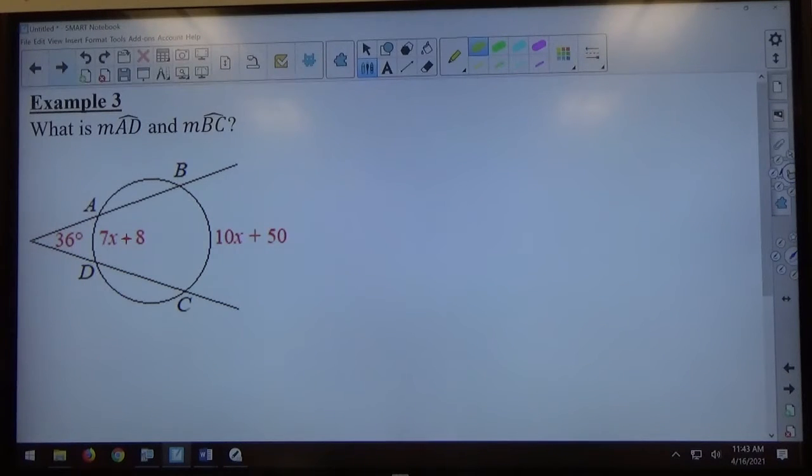Alright, so what is measure of arc AD and measure of arc BC? Notice we have two secants drawn to this circle. The angle is located where? Outside.